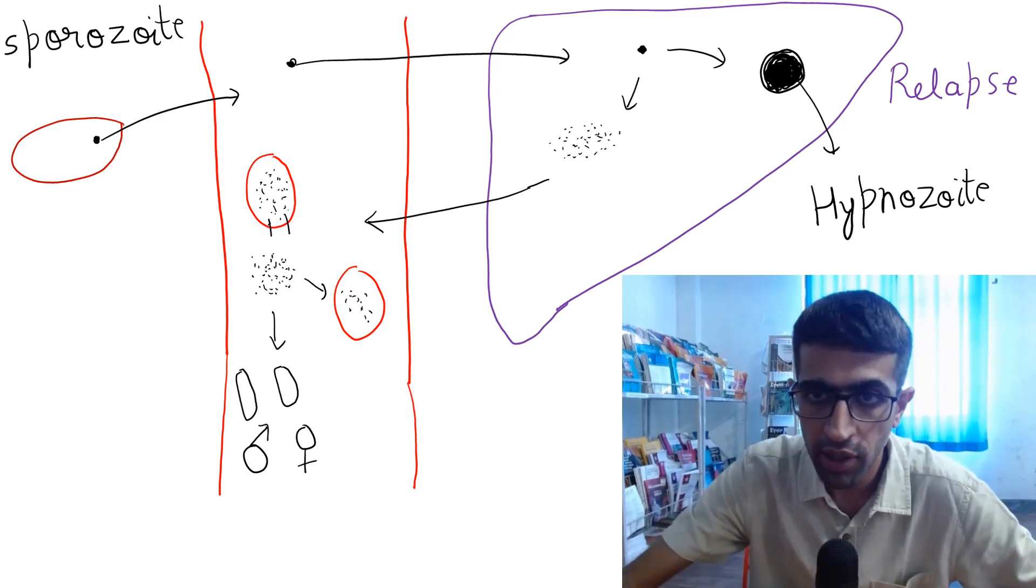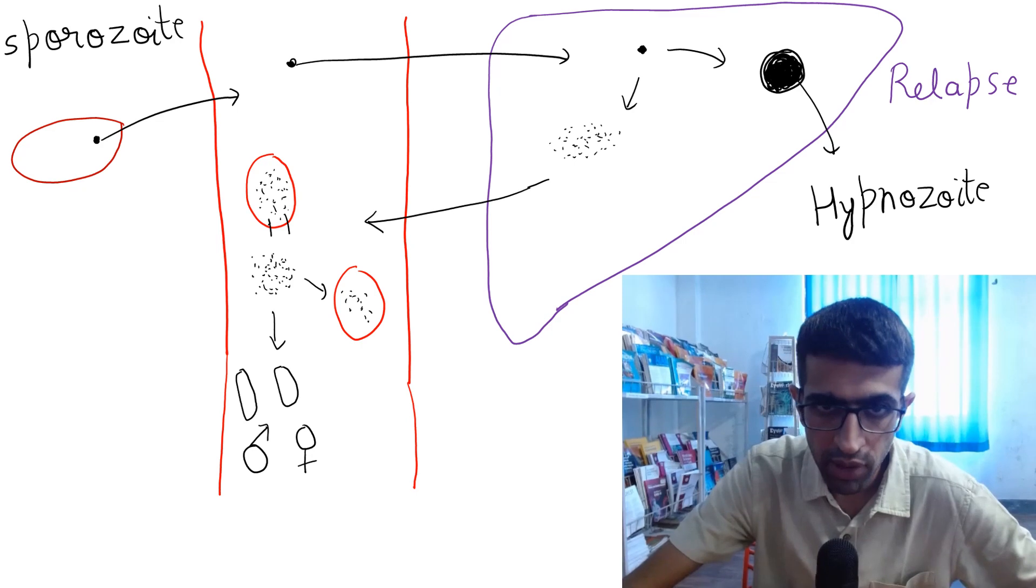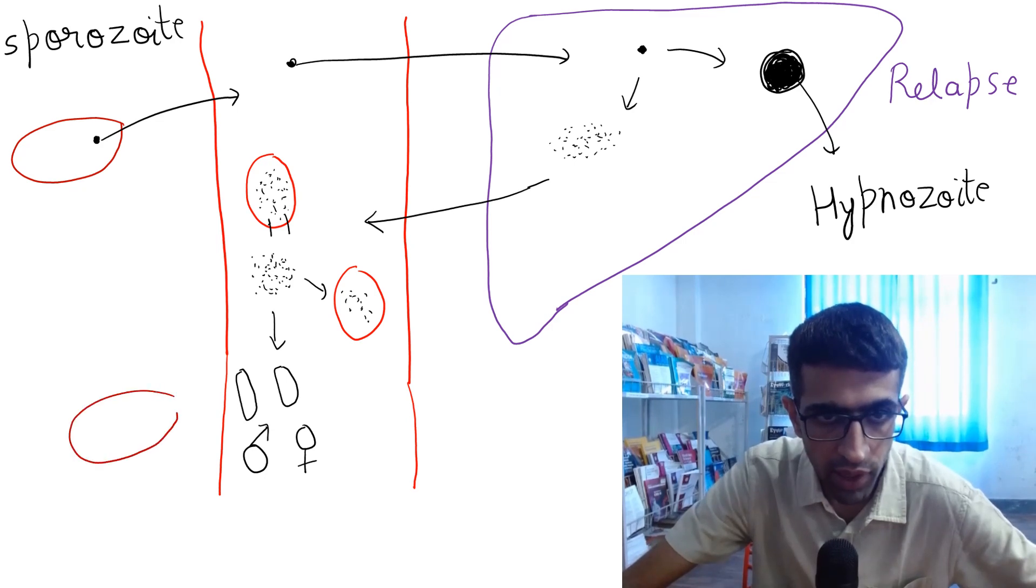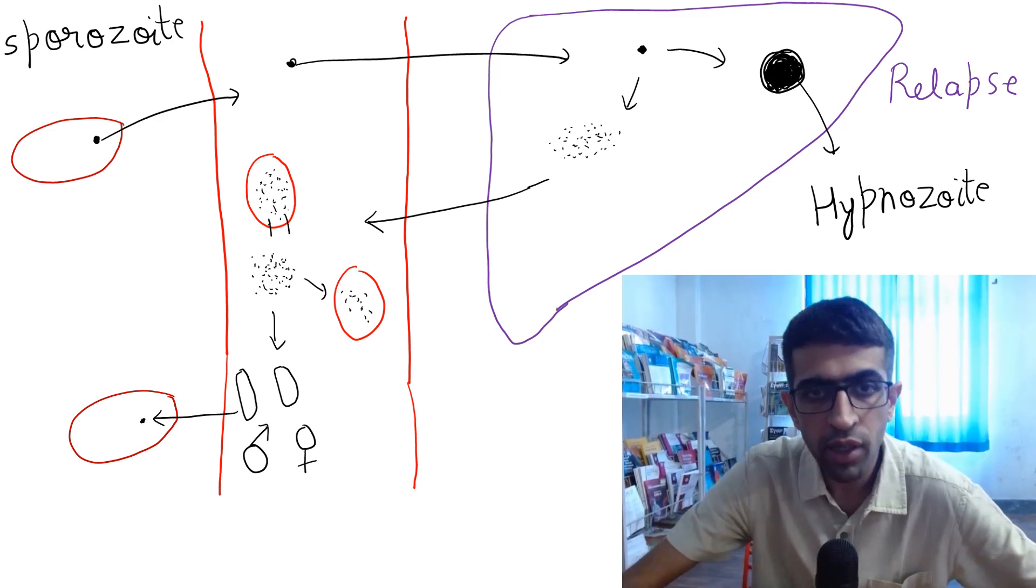That is relapse and recrudescence. Let me tell you that if the female Anopheles has a bite, then the male and female gametocytes will enter into it and then the zygotes will be made.